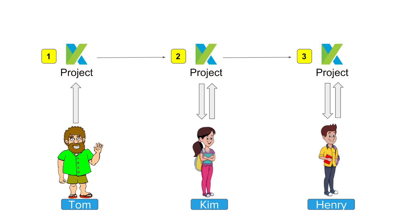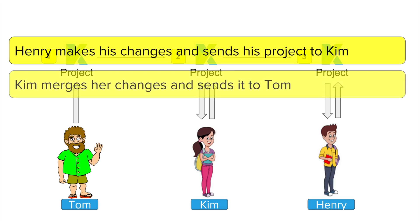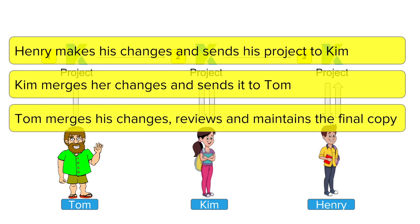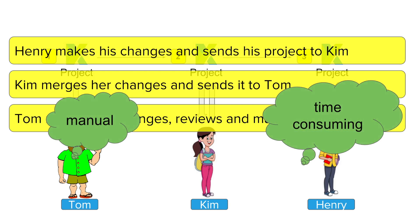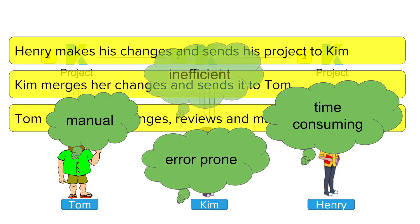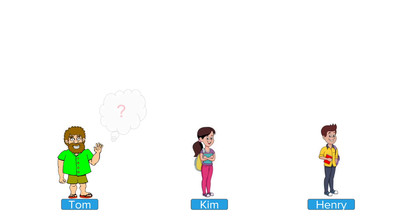One option is for Henry to send his project to Kim, Kim merges her changes and sends the final project to Tom, and Tom merges his changes, reviews everything, maintains the final copy, and distributes it to all team members. However, this is a very manual approach — time consuming, error prone, and highly inefficient.